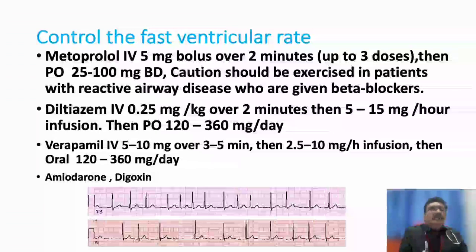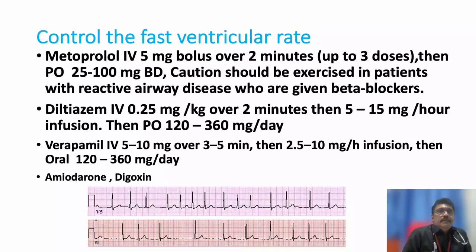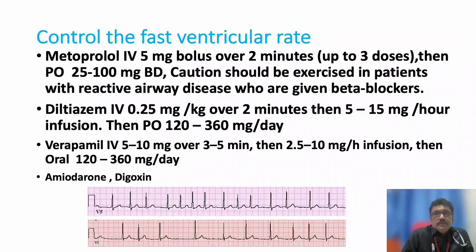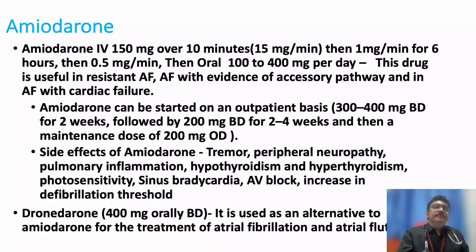For rate control, drugs include metoprolol, diltiazem, verapamil, amiodarone, or digoxin. Metoprolol, diltiazem, and verapamil are calcium channel blockers and must be used with caution in cardiac failure because they can reduce cardiac output. They should not be used in hypotensive patients. If BP is acceptable, you can use them; if BP is slightly low, go for amiodarone.